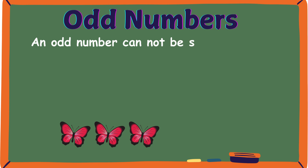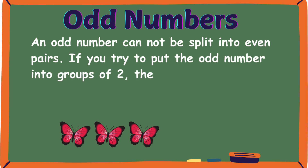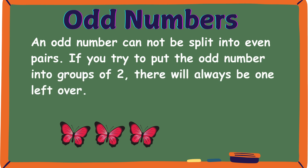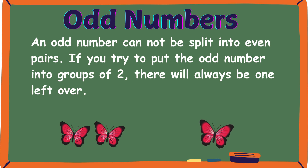An odd number cannot be split into even pairs. If you try to put the odd number into groups of two, there will always be one left over. Look at this butterfly. The two butterflies on the left can make a pair, but the butterfly on the right is on its own because it can't make a pair.